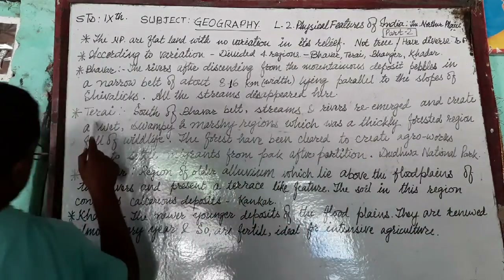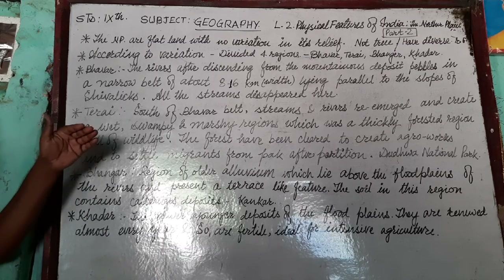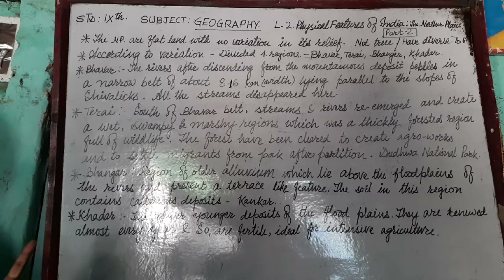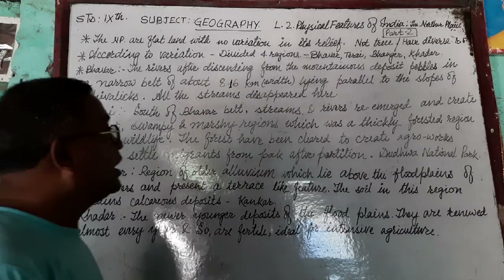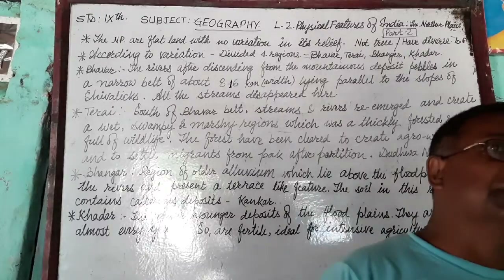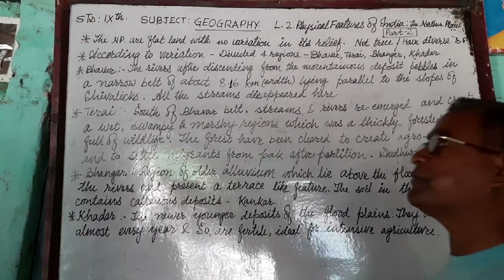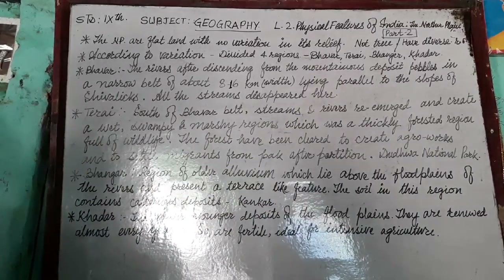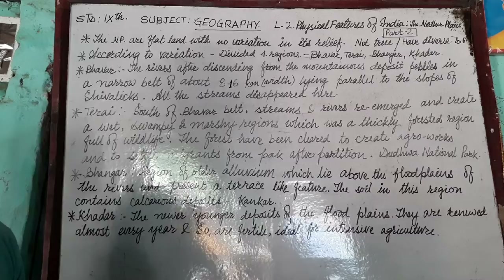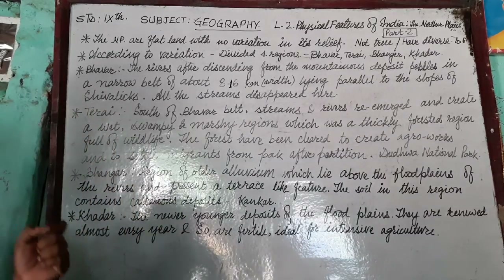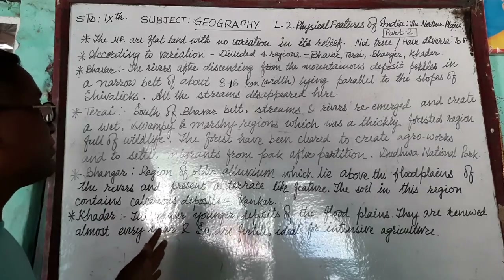After Bhavar, the second division is Tarahi. South of the Bhavar belt, streams and rivers re-emerge and create a wet, swampy, and marshy region, which was thickly forested. This is a swampy and forested region where a lot of forests are found and wildlife is contained here, with many plant and animal species living in it.